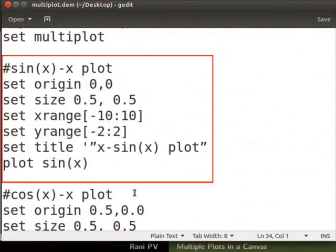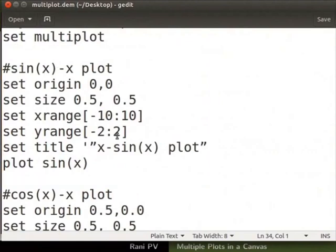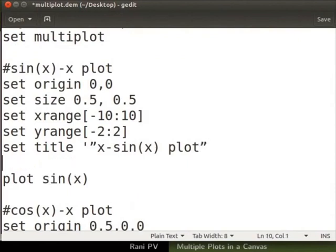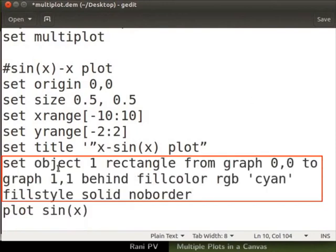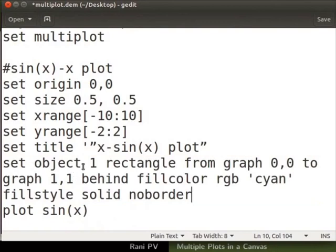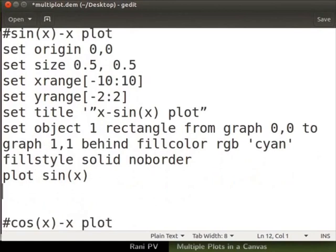Scroll to the sinex part of the script. Let's change the background color of the sinex plot. Start a new line before the plot command. To change the background color, we will insert an object in the graph. Enter the command as seen on the screen. Here we have set a cyan colored rectangle without border for the background. Start a new line after the plot command. Unset the cyan background object as shown here.